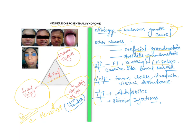You can see there is dimorphic lips, facial palsy, and scrotal tongue. These are the common features and this triad is very important. Moving ahead to the other features which could be seen: fever, chills, headache, visual disturbance.